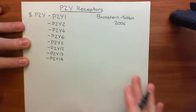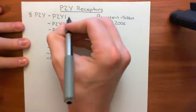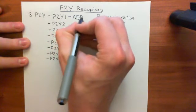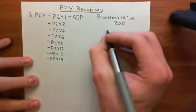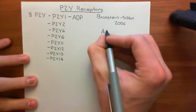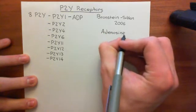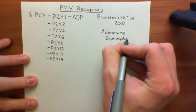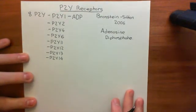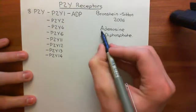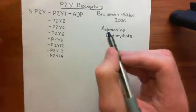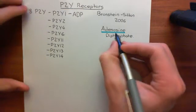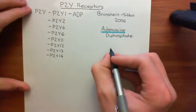Now let's discuss the ligands which act on these P2Y receptors. P2Y1 is activated by ADP. ADP stands for adenosine diphosphate — the A is for adenosine, D is for di, and P is for phosphate. Let's draw a cartoon structure of adenosine diphosphate. To do this, we need to know what adenosine means. Basically, adenosine means adenine bound to ribose.